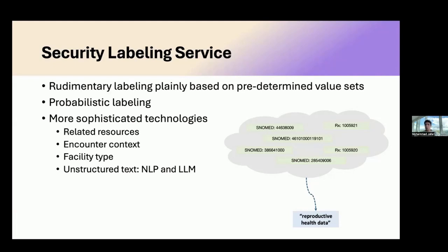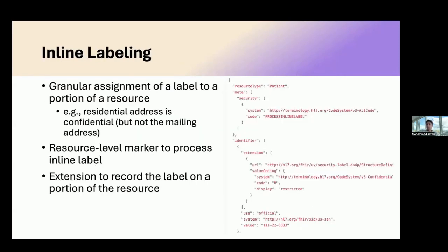The assignment of security labels by the security labeling service is basically a mapping. At its most rudimentary level it's a naive implementation — a mapping from clinical concepts into abstract categories — essentially using a value set or terminology slice as a lookup table to assign labels. This is the most basic level of security label assignment. There are also more sophisticated technologies emerging, such as large language models that take into account contextual information like encounter context and related resources, to produce more inference-proof labels.